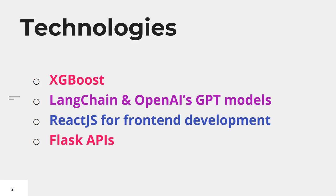Third, ReactJS, used for developing the front end where users can interact with the system. Fourth, Flask APIs — this will ensure seamless communication between the front end and back end.